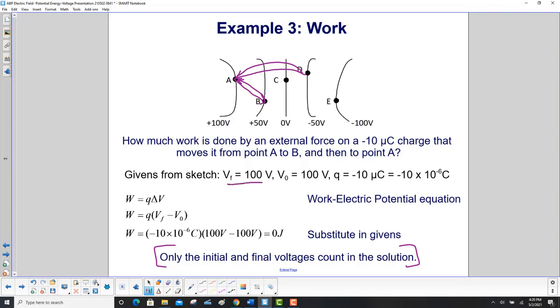Only the initial and final voltages count in the solution. We see that our final voltage is 100 volts, the initial is 100 volts, and you don't care what happened in between. Substitute in our values, and we get zero joules of work is done.